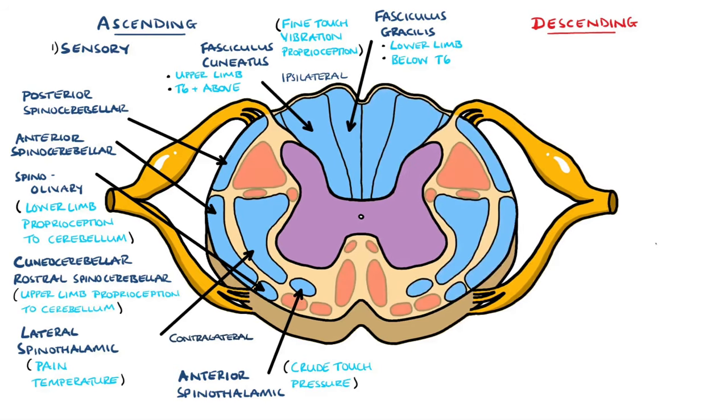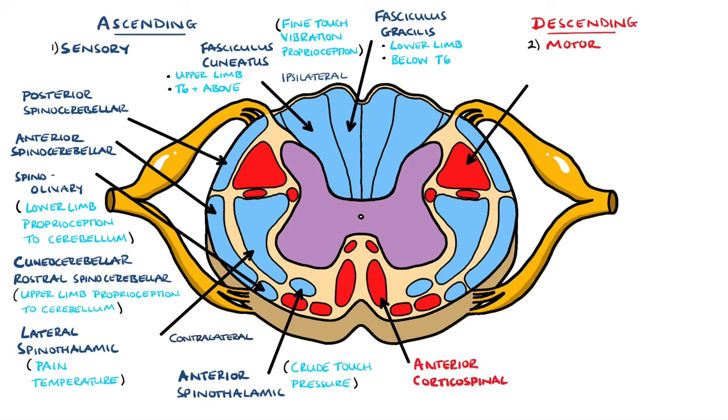Now we'll take a look at the descending pathways, the pathways responsible for muscle movement. First, we have the pyramidal tracts, which are the anterior and lateral corticospinal tracts. These carry signals down from the brain involved with voluntary movement of the limbs.